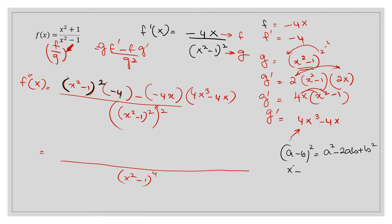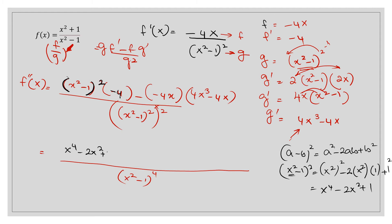In our case, (x squared minus 1) squared expands as: a is x squared, so a squared gives x to the power 4; minus 2ab gives negative 2x squared; and b squared gives 1. So we get x to the power 4 minus 2x squared plus 1, with negative 4 multiplied outside.